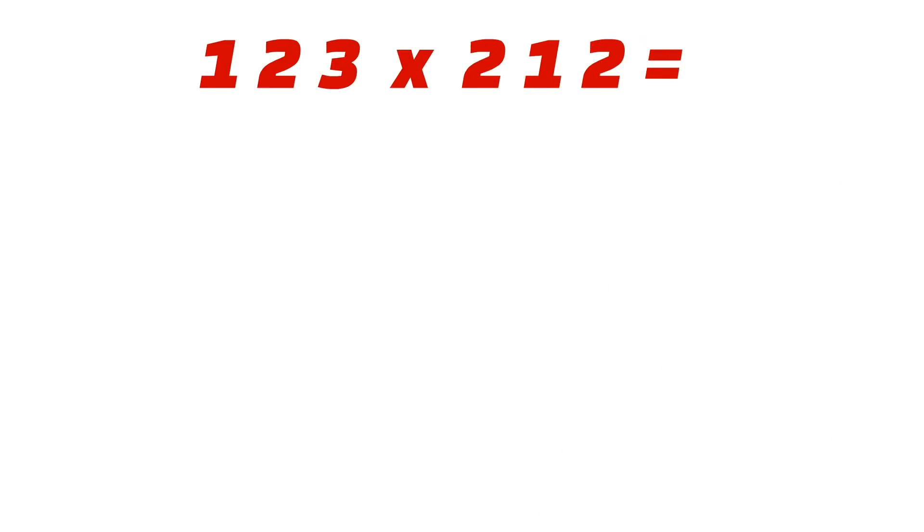Now, how to multiply a 3-digit number using the same trick. Let's take an example: 123 × 212. The first digit is 1, so we will draw one line.